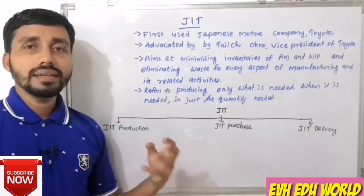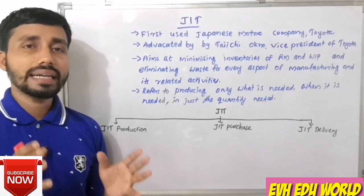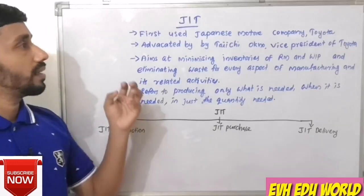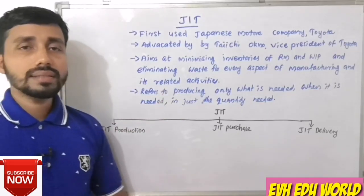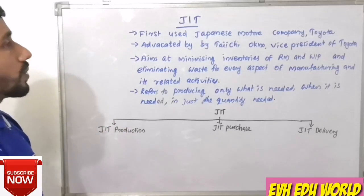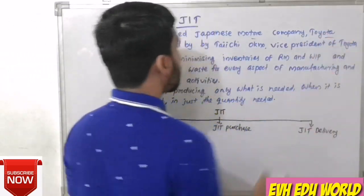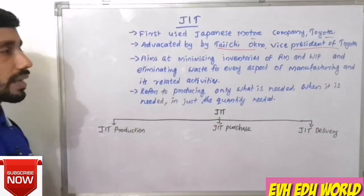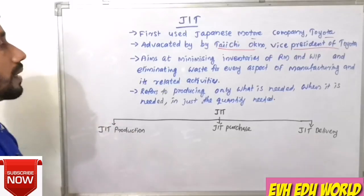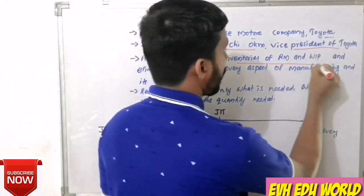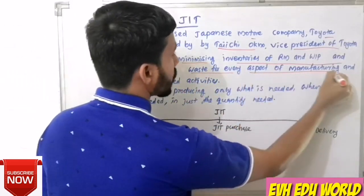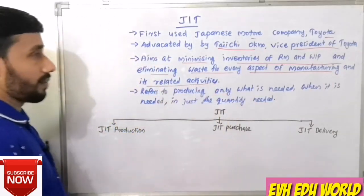The first class is Just-In-Time. It is a modern technique of stores control, used by Japanese Motor Company Toyota and advocated by Taiichi Ohno, Vice President of Toyota. JIT technique aims at minimizing inventories of raw materials and work-in-progress, and eliminating waste from every aspect of manufacturing and its related activities.